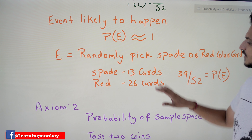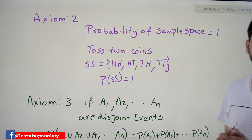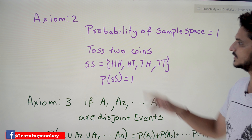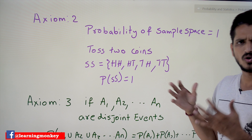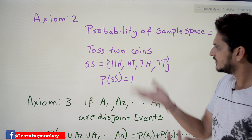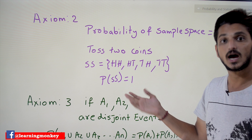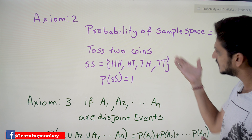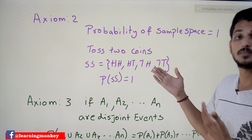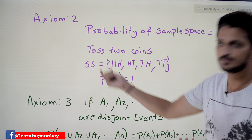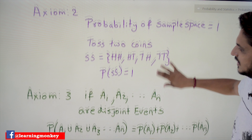Coming to the next axiom: the probability of the sample space is equal to 1. For example, when tossing two coins, the sample space is {HH, HT, TH, TT}. If you toss two coins, any one of these events is going to happen. The probability of the sample space is 1, meaning 100% — something from these elements will definitely happen.